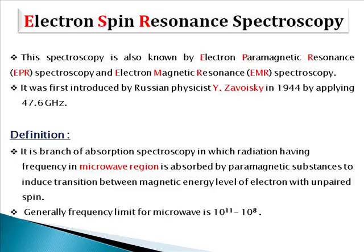The definition of ESR spectroscopy is: it is a branch of absorption spectroscopy in which radiation having a frequency in the microwave region is absorbed by paramagnetic substances to induce a transition. Here, paramagnetic substances are the matter that interacts with the radiation in the microwave region. ESR or EPR spectroscopy is observed in the microwave region.